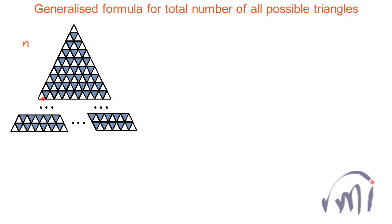In this particular triangle we have total 1, 2, 3, 4, 5, 6, 7, 8, and 9 triangles in the base. So in this particular case n is equal to 9. Now let us try to find the total number of triangles.